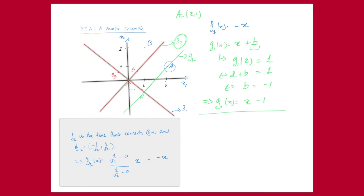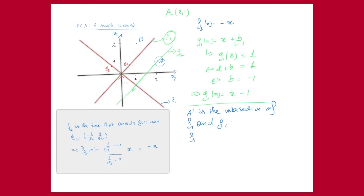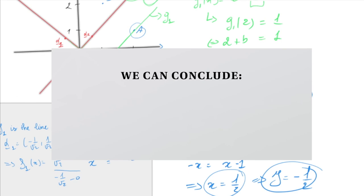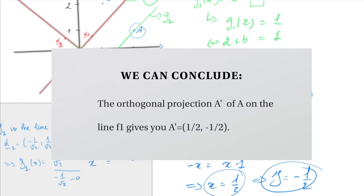A prime is the intersection of F1 and G1. Setting F1(x) = G1(x): -x = x - 1, so x = 1/2. Plugging into F1: y = -1/2. We conclude that the orthogonal projection A prime of A on F1 is the point (1/2, -1/2).